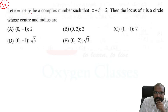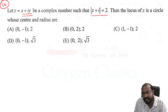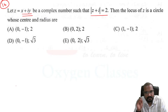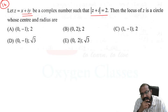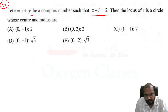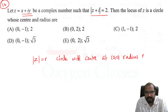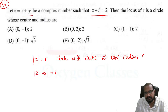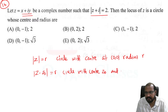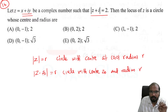Next: z equals x plus iy such that |z + i| equals 2. The locus of z is a circle with some center and radius r. This equation represents a circle. It is a circle with center z₀ and radius r.